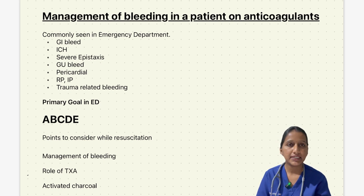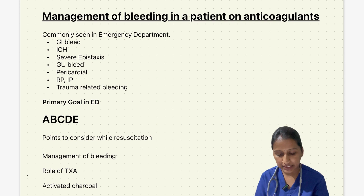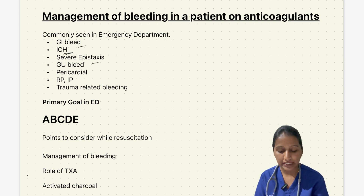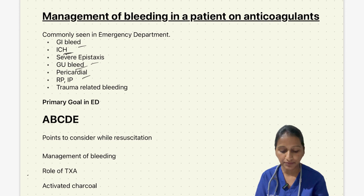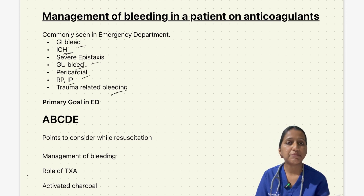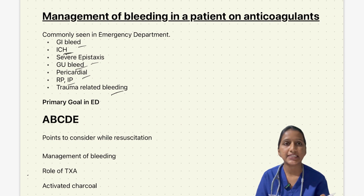Generally, life-threatening bleeding — which can present as GI bleed, intracranial hemorrhage, severe epistaxis, genitourinary bleed, pericardial collection, retroperitoneal, intraperitoneal, and trauma-related bleeding — secondary to anticoagulants is commonly seen in the emergency department.